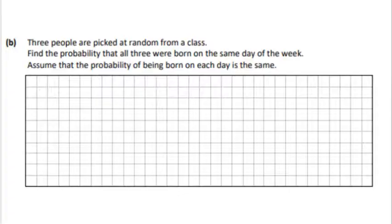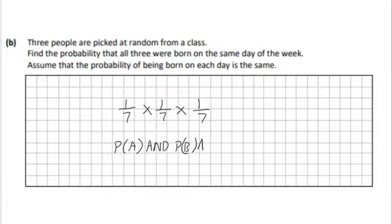Three people are picked at random from a class. Find the probability that three were born on the same day of the week. So what we got to do here is just look at each event as you go. So one over seven is the probability of one day in the week. If we choose another person, we need to multiply that in as we're using the AND rule. And again, one over seven, one over seven.